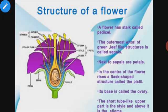Assalamu alaikum warahmatullahi wabarakatuh. Hope everyone is good and fine. Dear students, in the previous lecture I discussed about the functions of leaves and modifications in leaves. Today I will discuss about the structure of a flower, including the various parts and the sexual reproductive organs. The main parts of a flower are pedicel, thalamus, sepals, petals, and carpel.